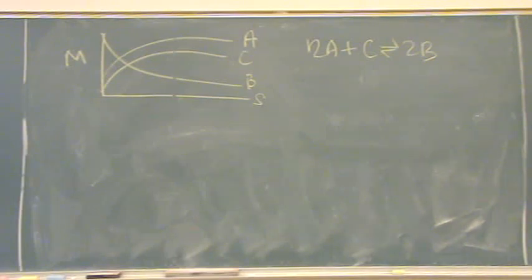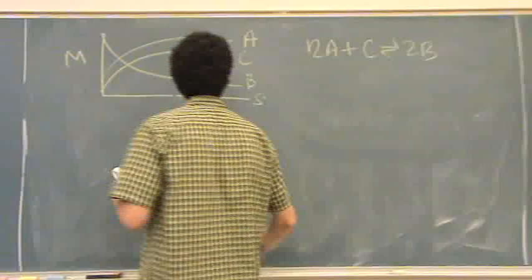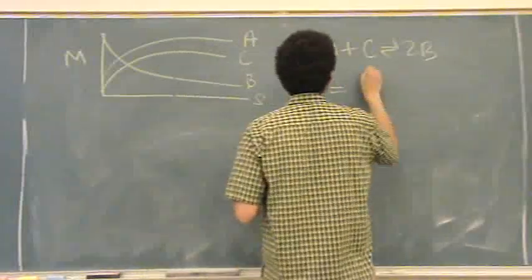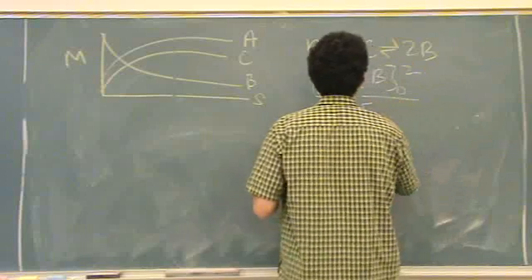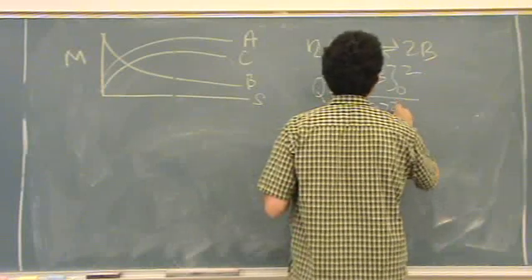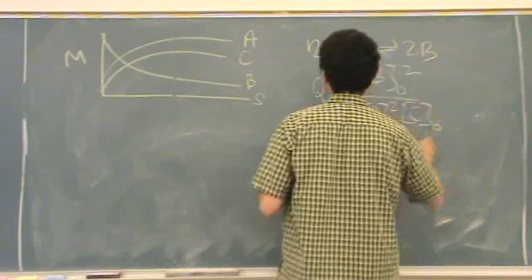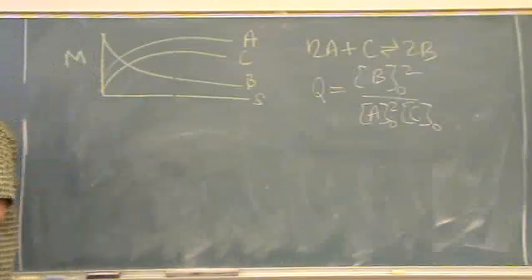At time equals zero, determine Q. At time equals zero, Q is the concentration of B initial squared over A initial squared times C initial. Well, you just take the values right off the graph.